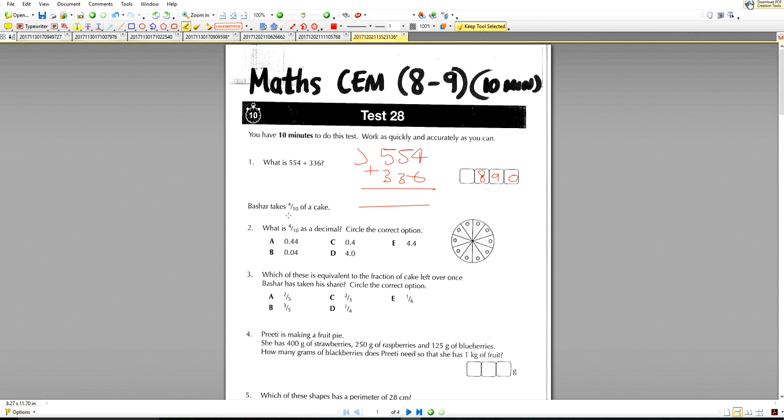Question number two. Bashar takes four tenths of a cake. So this cake has been divided into 10 pieces and each part is called a tenth. So Bashar has four tenths. To change it as a decimal, we say four divided by 10. That's what four tenths means. Four divided by 10, you put the decimal point at the end of the whole number and you move it back. So that gives us an answer of 0.4.